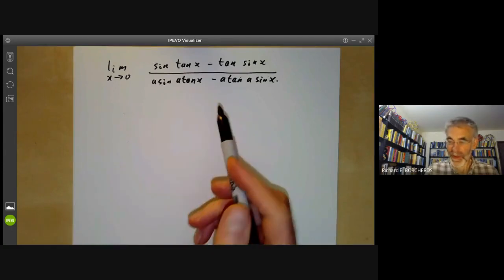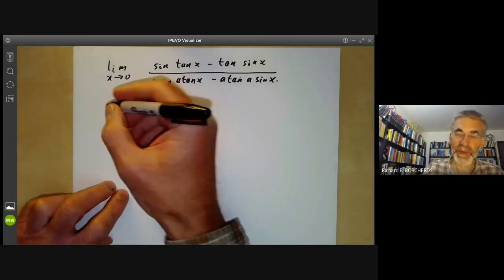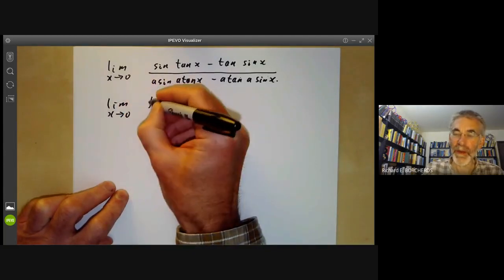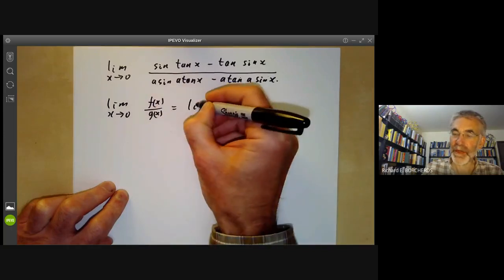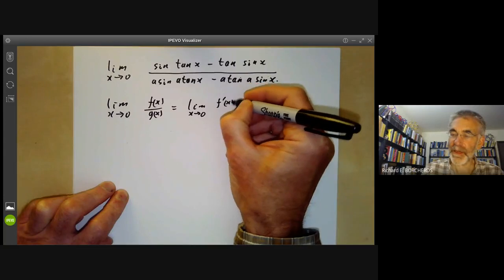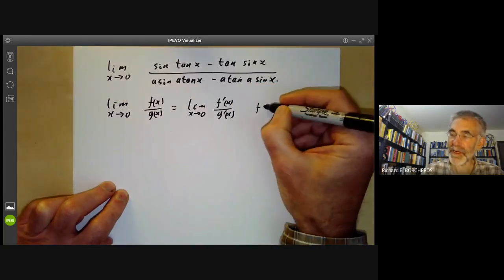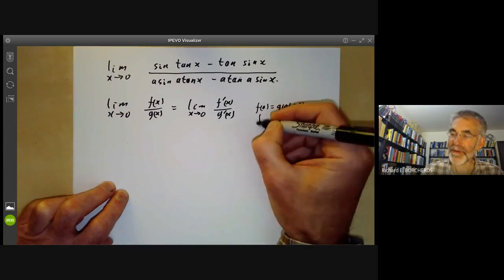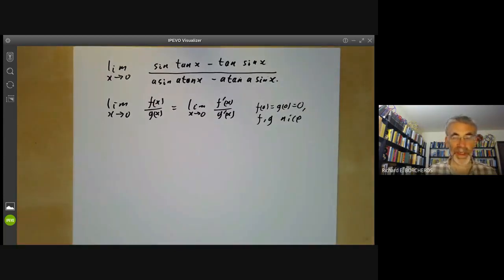Your standard reaction on seeing a limit like this is to apply L'Hopital's rule. This says that the limit as x tends to zero of f(x) over g(x) is the limit as x tends to zero of f'(x) over g'(x), provided f(0) equals g(0) equals zero, and f and g are nice functions.